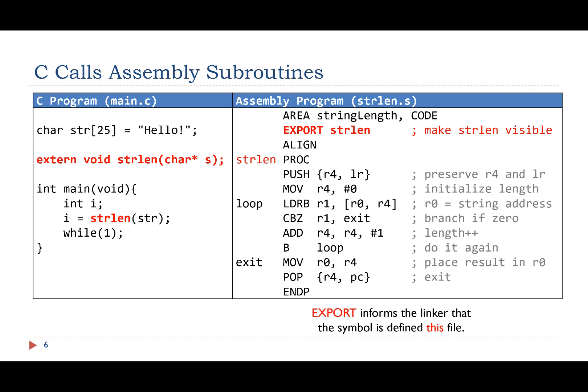This example shows how a C program calls an assembly subroutine. Different from the previous examples, the C program and the assembly subroutine are in two different source files, one in main.c, the other in strlen.s. The assembly program must export the subroutine name to make it visible when object files are linked to build an executable file.